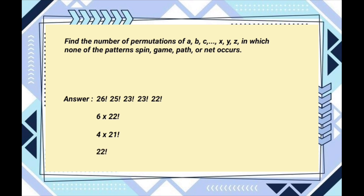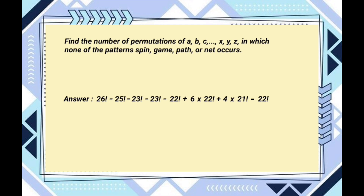Putting it all together, the number of permutations of A, B, C, X, Y, Z in which none of the patterns spin, gain, path, or net occur is: 26! minus 25! minus 23! minus 23! minus 22! plus 6 times 22! plus 4 times 21! plus 22 factorial.